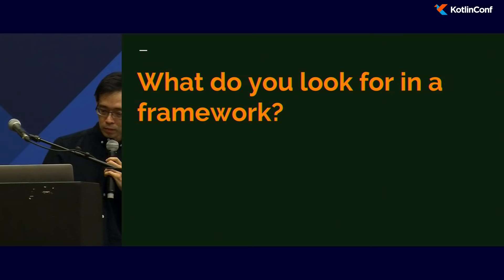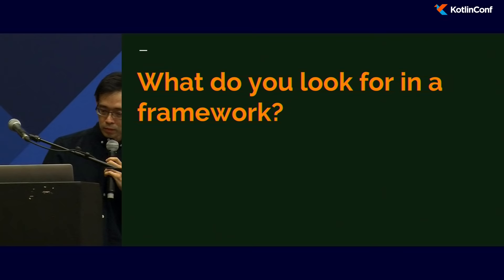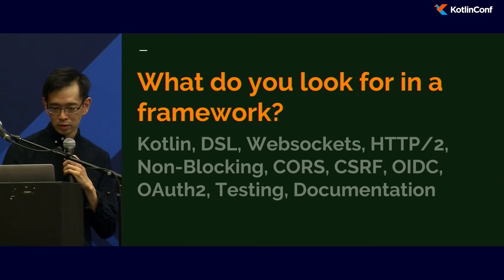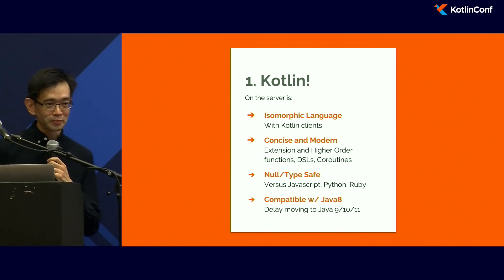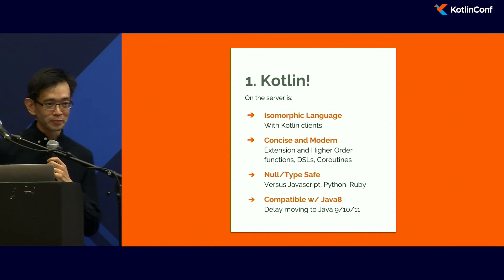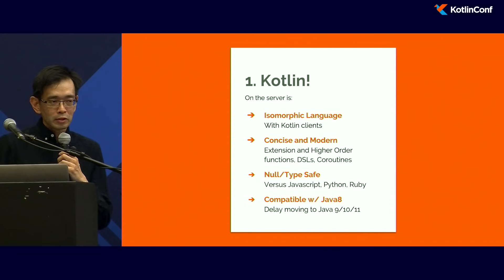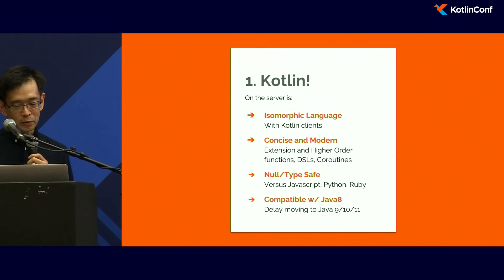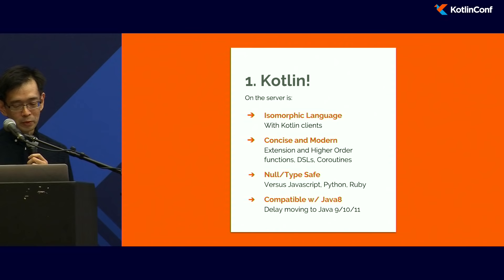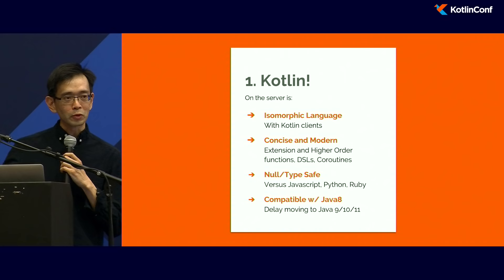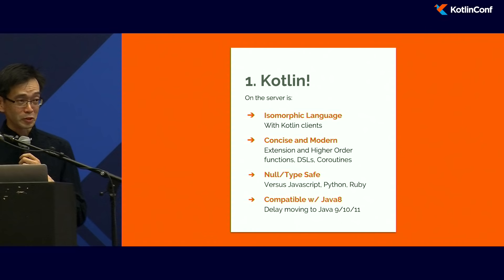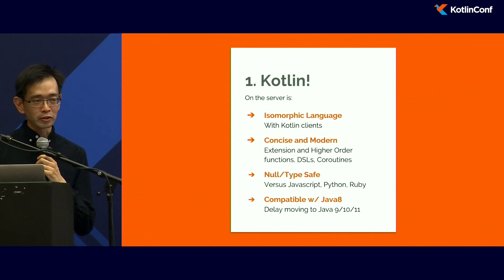What do you look for in a framework? First, since you're in this talk, Kotlin. If you're using Kotlin clients, it gives you an isomorphic language so you can move between both and do development on both. Kotlin is concise and modern — it uses extension functions, higher order functions, DSLs, and coroutines. It has strong type safety compared to scripting languages, and it's compatible with Java 8, so you don't have to move immediately to Java 9, 10, or 11.